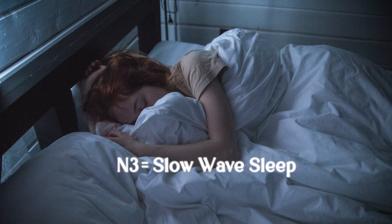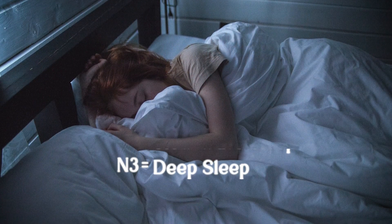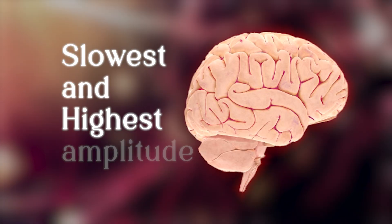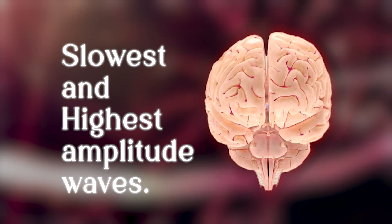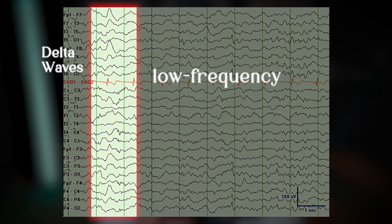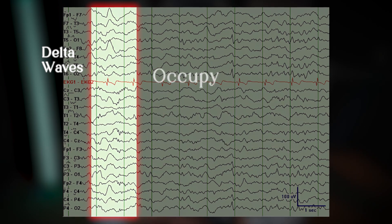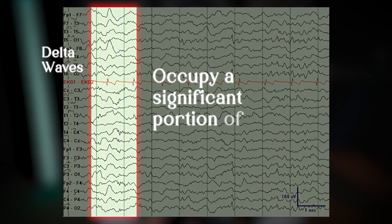N3, also known as slow-wave sleep or deep sleep, is the stage of sleep where the brain produces the slowest and highest amplitude waves of the sleep cycle. Delta waves which define the stage are low frequency — 1.5 to 2.5 Hz — and high amplitude, often exceeding 75 µV. These waves occupy a significant portion of the EEG background during this stage.